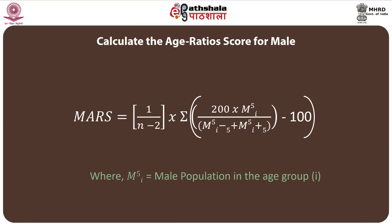In a similar way, we calculate the Male Age Ratio Score (MARS). The formula is exactly the same except F is replaced by M: (1/(n−2)) × Σ |200 × M(i,5) / (M(i−5,5) + M(i+5,5)) − 100|. Here M(i,5) is the male population in the age group and M(i−5,5) is the population in the preceding age group.